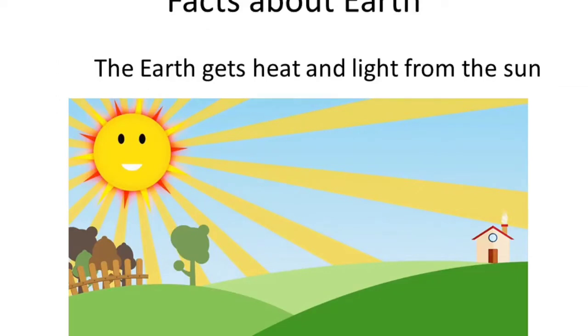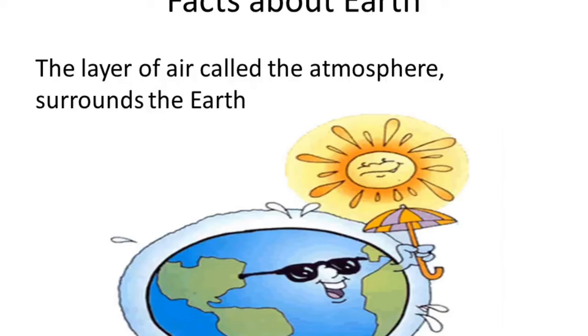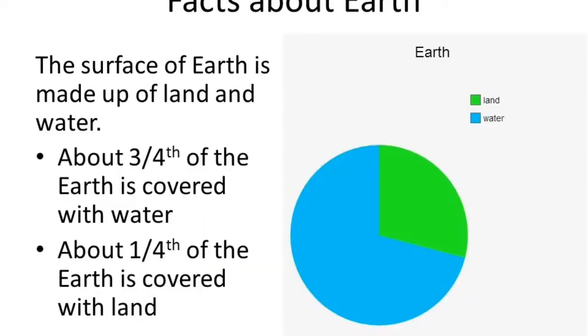Facts about earth. Fact number one. The earth gets heat and light from the sun. Fact number two. The layer of air called the atmosphere surrounds the earth. So, atmosphere is the layer of earth that surrounds the earth. It also protects us from harmful ultraviolet rays of the sun. Fact number three. The surface of the earth is made up of land and water. So, about three fourths of the earth is covered with water and about one fourth of the earth is covered with land.